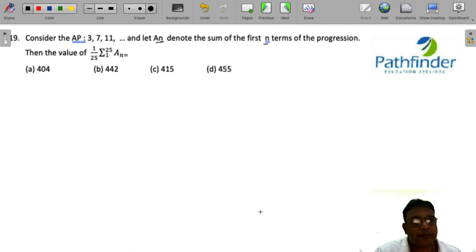Now in order to solve this question, let us first of all find what this progression is. This progression is 3, 7, 11 and so on, and a_n is the sum of the first n terms.